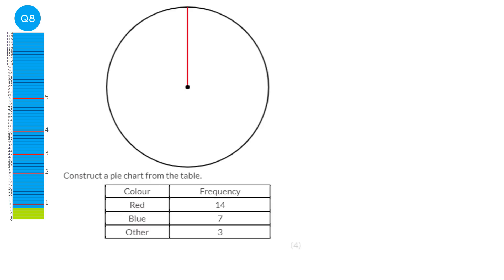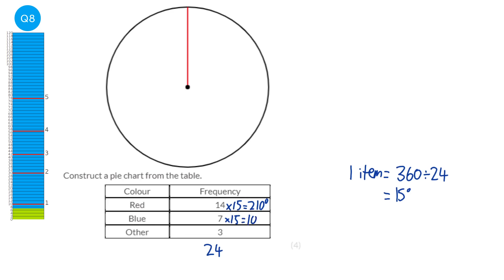The first thing to do when working out angles for a pie chart is to add up the frequencies: 14 plus 7 plus 3 equals 24. Then find the angle that one item represents: 360 degrees divided by 24 gives 15 degrees per item. To find the angle for red: 14 times 15 is 210 degrees. For the next category: 7 times 15 is 105 degrees. The final one: 3 times 15 is 45 degrees. Adding them up gives 360, which is correct.